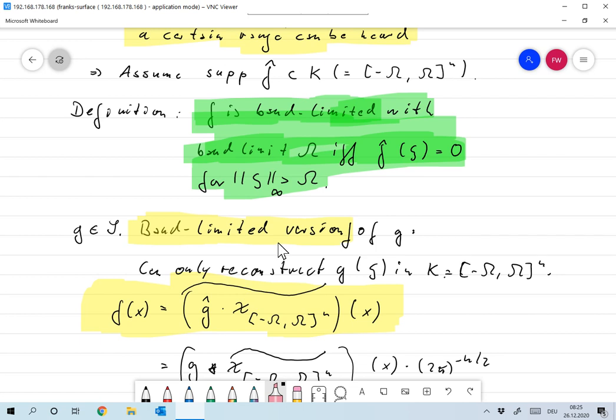We can only reconstruct the Fourier transform, we can only measure the Fourier transform of g in some compact set K. And again, we take that compact set as minus omega to omega to the n. And so the only thing we can do to approximate g...